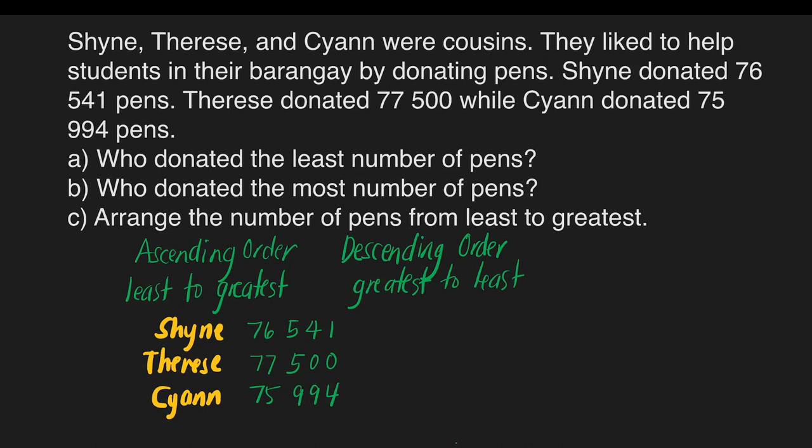When we compare bigger numbers, we compare the digits starting from the left. The greater the value of the digit, the greater is the value of the number. In this case, we have digit 7 on all three given numbers. It means they have the same value.